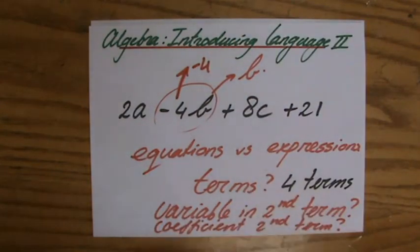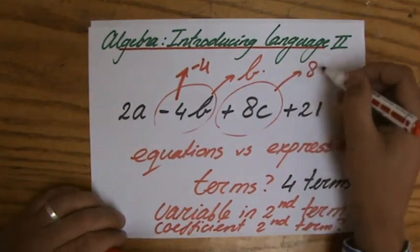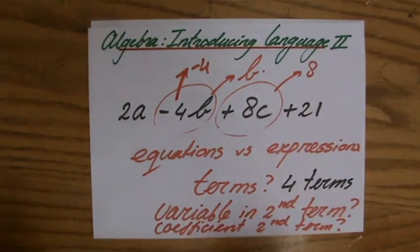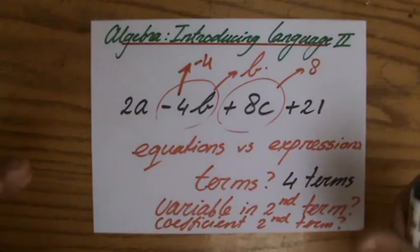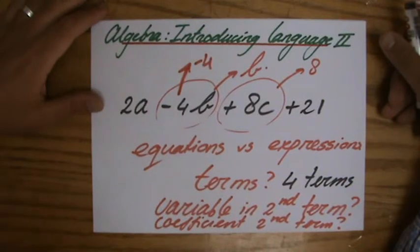What is the coefficient of my third term? The coefficient of my third term is a positive 8. Okay? Very good. So that is some language, important that you are familiar with it, if you want to understand the algebra from now on.